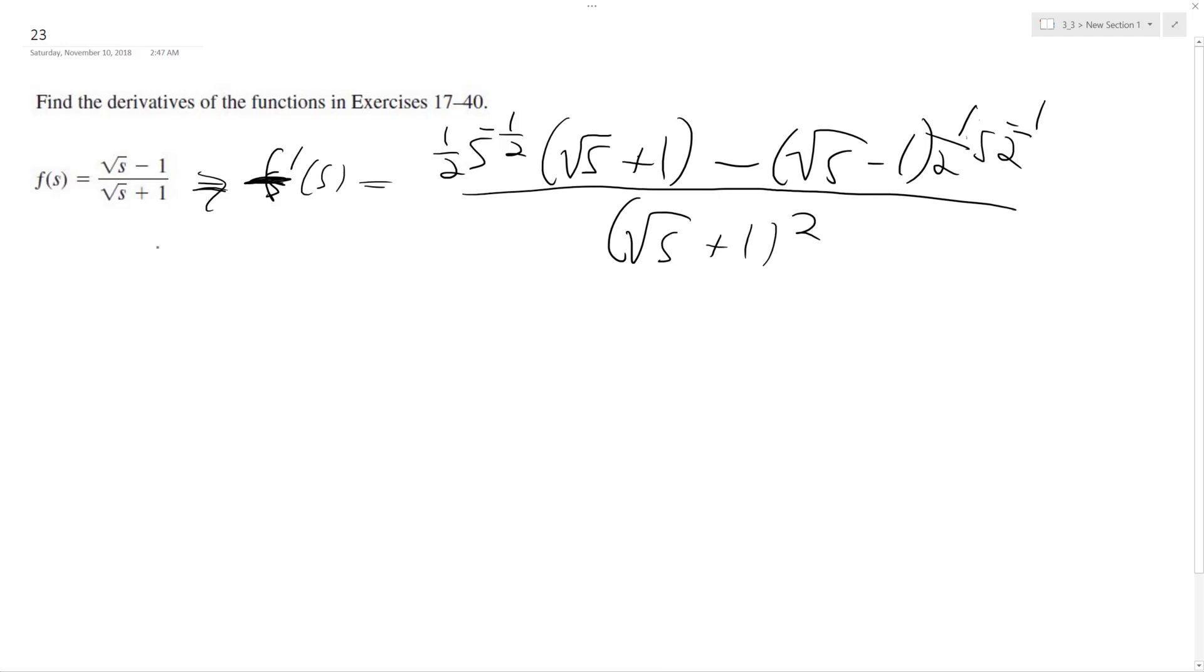So if we distribute everything on top, what we end up with is square root of S plus 1 all over the square root of S, and then minus quantity square root of S minus 1 all over the square root of S.